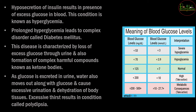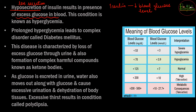If insulin production decreases — hyposecretion of insulin — less insulin is available. Since insulin's normal function is to decrease blood glucose, if blood glucose is not being decreased, the condition becomes excess glucose in the blood because the hormone isn't there and glucose cannot enter the cells. This condition of excess glucose in the blood is called hyperglycemia. If prolonged, it can lead to a complex disease called diabetes mellitus.